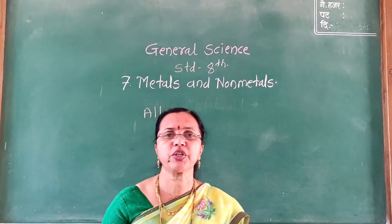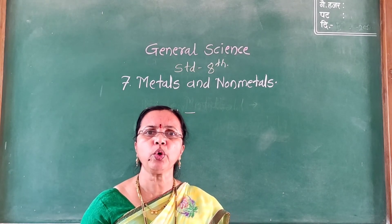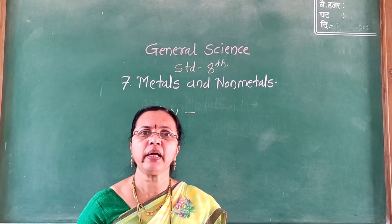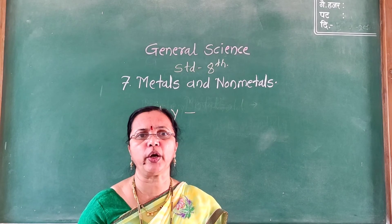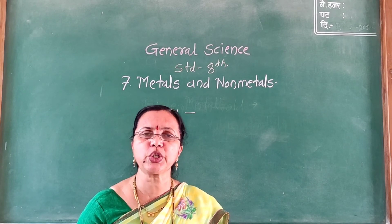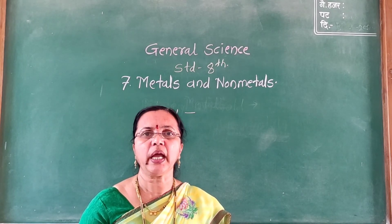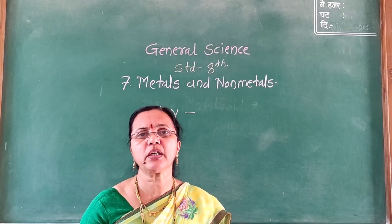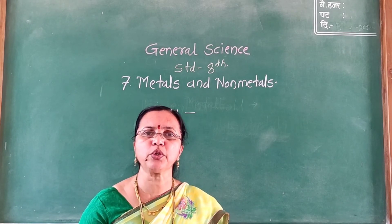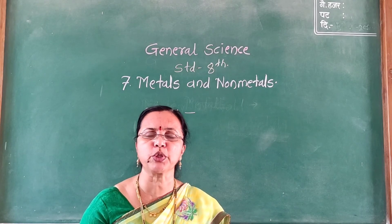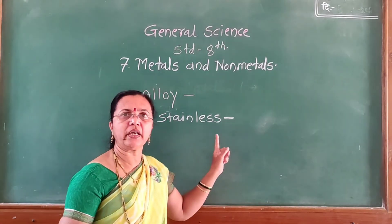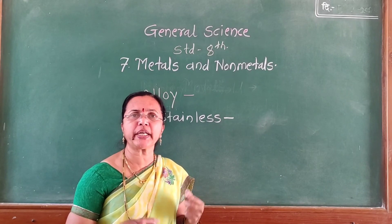Two or more metals, or a homogeneous mixture of metal and non-metal, is called an alloy. Alloys are made by mixing the constituent elements in required proportions. An example of an alloy is stainless steel, which is commonly used for utensils.